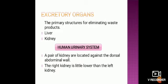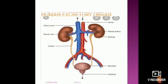A pair of kidneys are located against the dorsal abdominal wall. The right kidney is slightly lower than the left kidney. Here is a diagram showing the location of the kidneys — the left kidney is on the higher side and the right kidney is slightly lower.